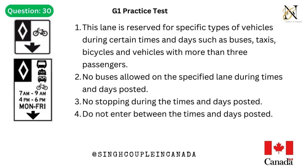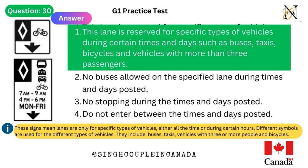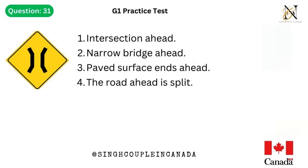Question 30. This traffic sign means: 1. This lane is reserved for specific types of vehicles during certain times and days such as buses, taxis, bicycles, and vehicles with more than 3 passengers. 2. No buses allowed on the specified lane during times and days posted. 3. No stopping during the times and days posted. 4. Do not enter between the times and days posted. Answer is 1. This lane is reserved for specific types of vehicles during certain times and days such as buses, taxis, bicycles and vehicles with more than 3 passengers. These signs mean lanes are only for specific types of vehicles, either all the time or during certain hours.